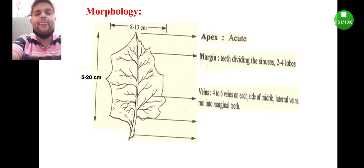Next, the veins: 4 to 6 veins on each side of the midrib. Another important character is that although they run towards the margin, they don't touch the margin. This is a very important morphological feature, anastomizing towards the margin.